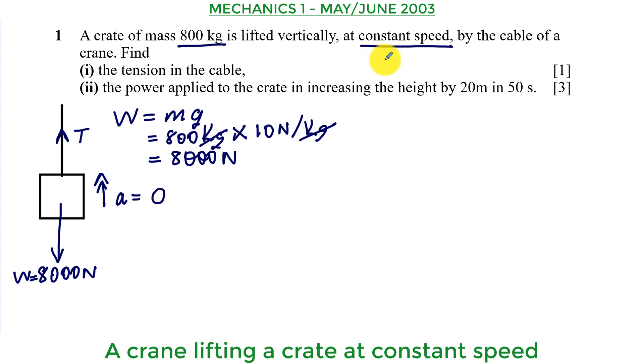That is why they gave us this word here, constant speed. It means that the acceleration of the object is zero. Now why is that important? It is important because we want to resolve upwards where we do the resultant force upwards is equal to the mass times the acceleration upwards.